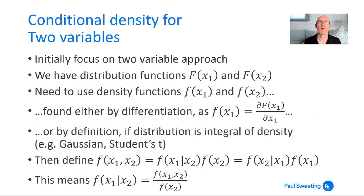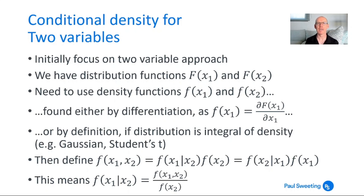When looking at this approach of conditionality, it's easiest to look at just two variables. The remainder of this video focuses on the two-variable case, because this gives us the building blocks which can then scale up to three variables and up to any complex type of R-vine we might end up looking at. So the focus here is on this core building block: the two-variable approach.